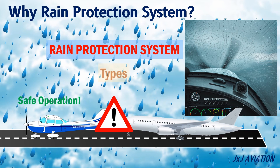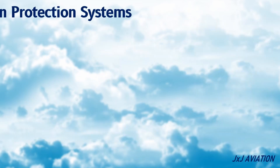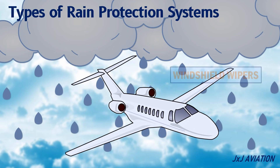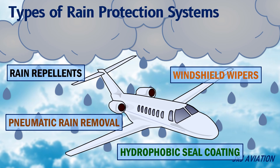So the rain protection system is installed to allow pilots to have a clear view ahead of the aircraft during rains. Let's look at the different types of rain protection systems. An aircraft may have only one or multiple rain protection systems, depending on the operating environment. This system is used only at low altitudes during rains to get a clear view of the outside environment.